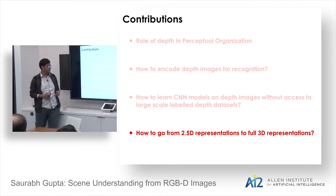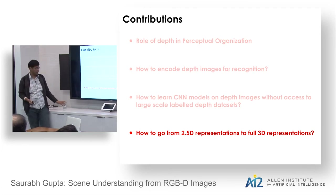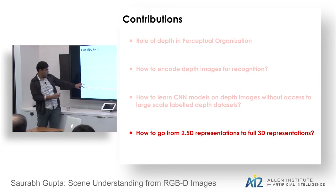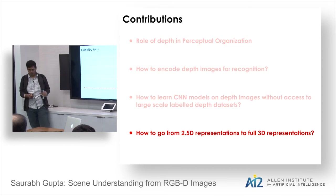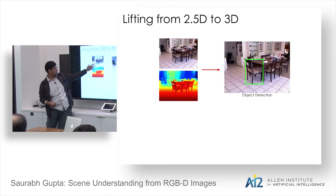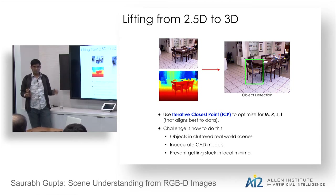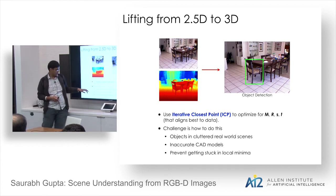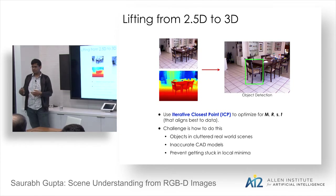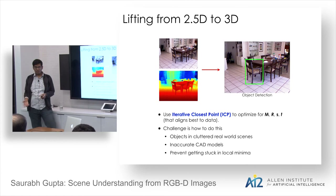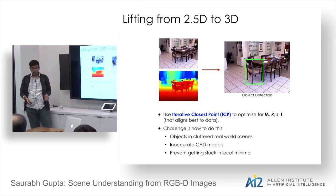The last topic: going from 2.5D to full 3D. So far our output is a detection bounding box; we want to fit CAD models to the data. We use iterative closest point (ICP), but real-world scenes have clutter, inaccurate CAD models, and susceptibility to local optima. We address all three limitations.